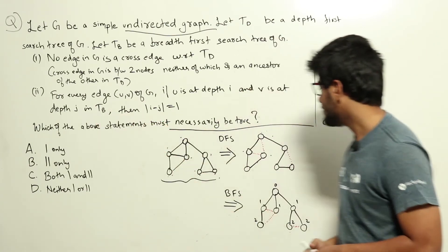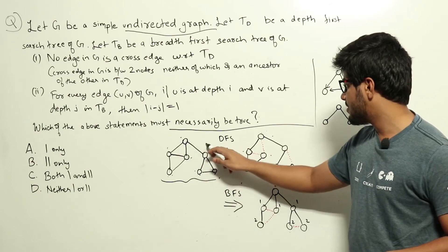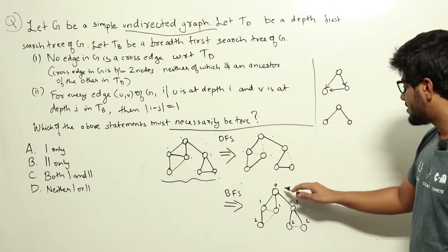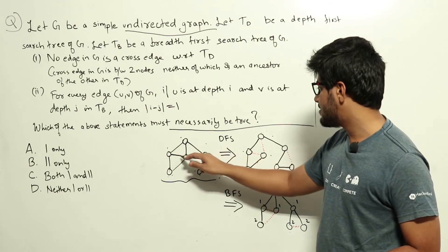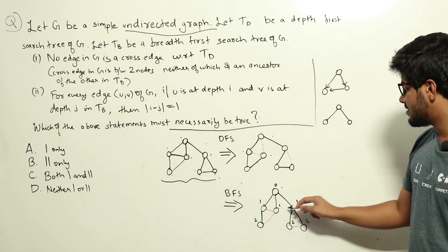Let us look at statement 2. Here we are constructing a BFS tree. The same thing we follow for this graph. We start with this node, let us say this is the root node. It has these three children, so in BFS we will be adding these three first at depth 1.